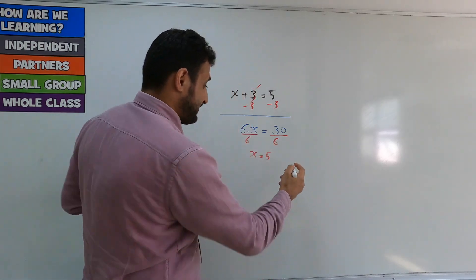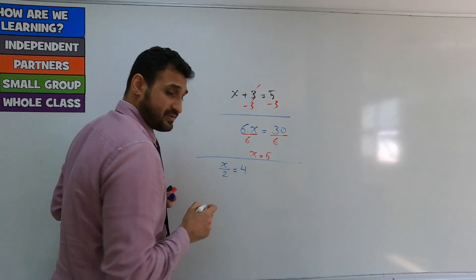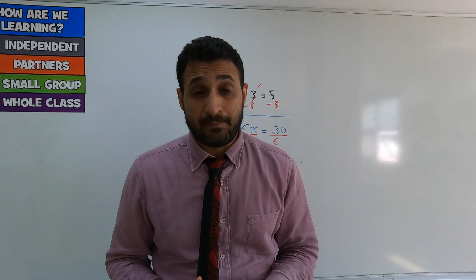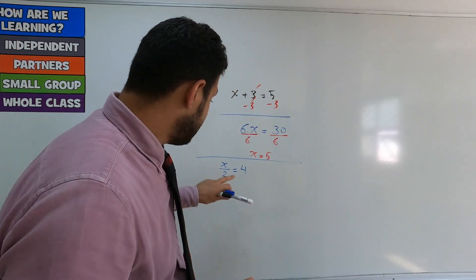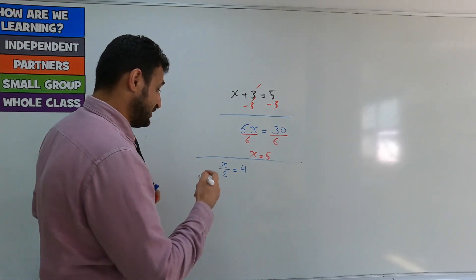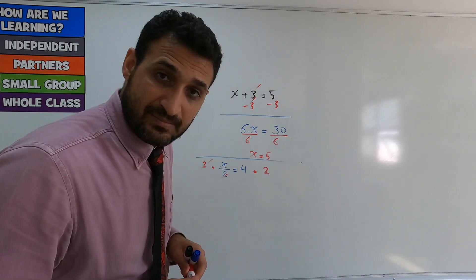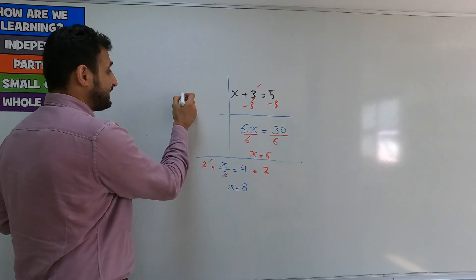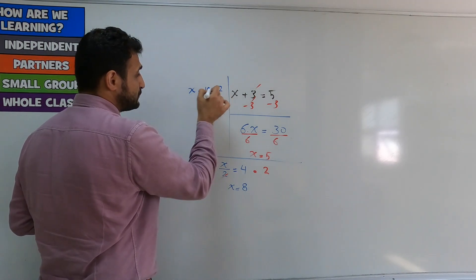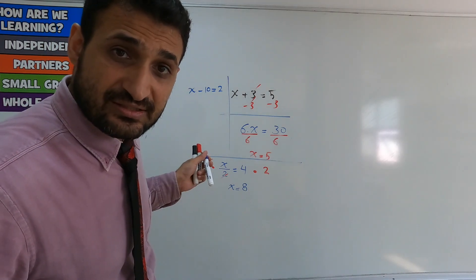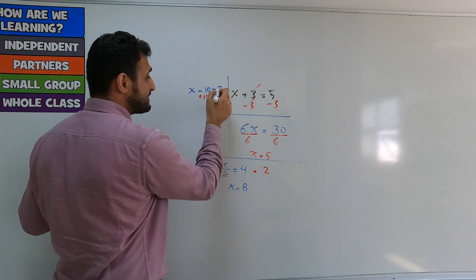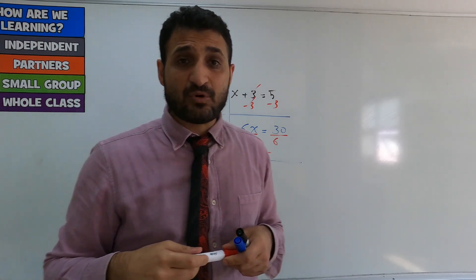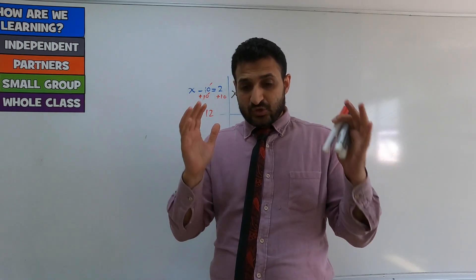What if x is divided by a number? For example, x over 2 equals 4. x is divided by 2, so I need to do the opposite. What's the opposite of division? Multiplication. So multiply both sides by 2 — the 2s cancel — and x equals 8. What if x is subtracted by a number, like x minus 10 equals 2? The opposite of subtraction is addition, so add 10 to both sides to isolate x. x equals 12. Your task is always to isolate x — leave it alone.